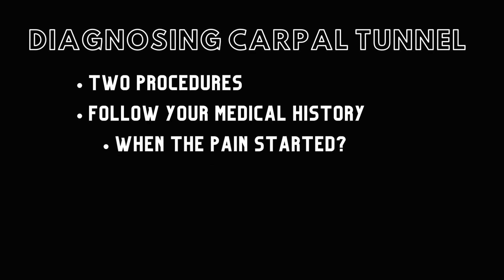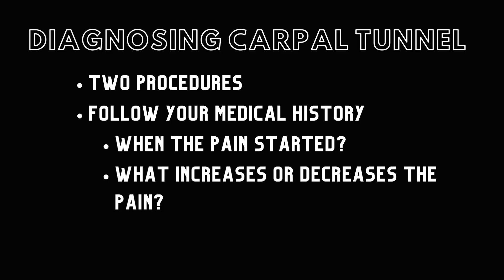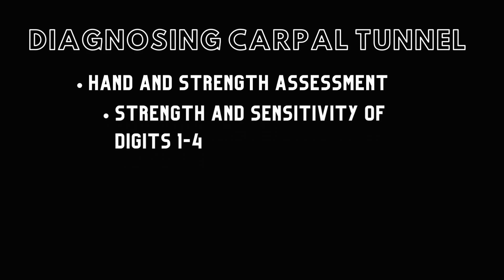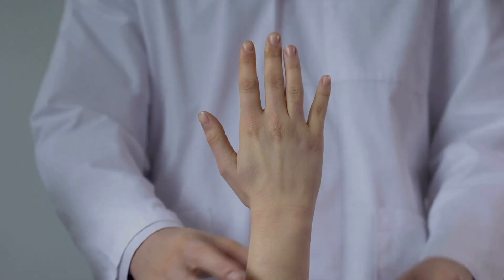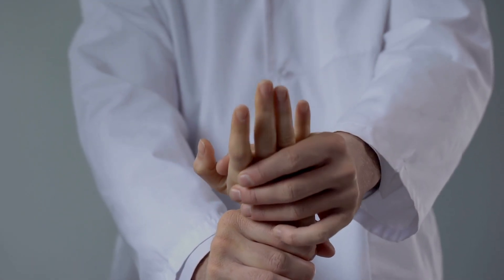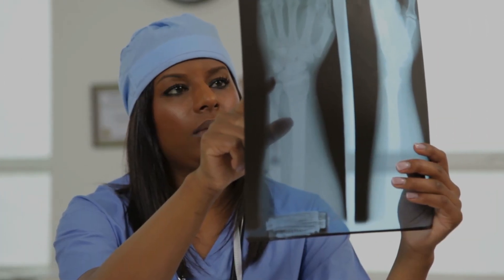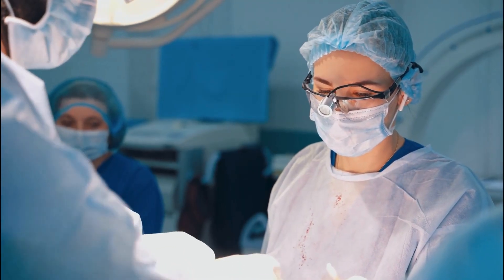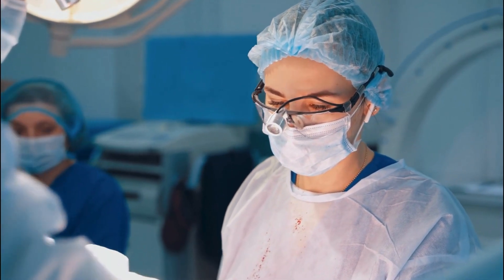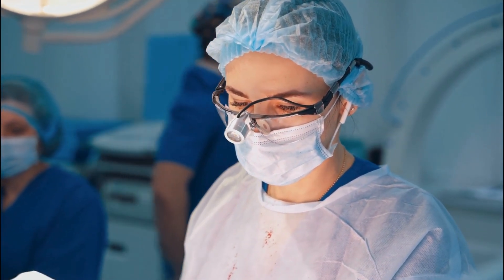In order to diagnose carpal tunnel syndrome, there are two procedures. A doctor can follow your medical history, detailing when the pain started and what actions increase or decrease the pain, or a hand and strength assessment can be performed involving the strength and sensitivity of digits one through four. To treat carpal tunnel syndrome, physical therapy or the use of a brace can help alleviate the pain. Other options include imaging or electromyogram and nerve conduction studies to determine if surgery is recommended. The goal of surgery is to increase the width of the carpal arch and carpal tunnel.